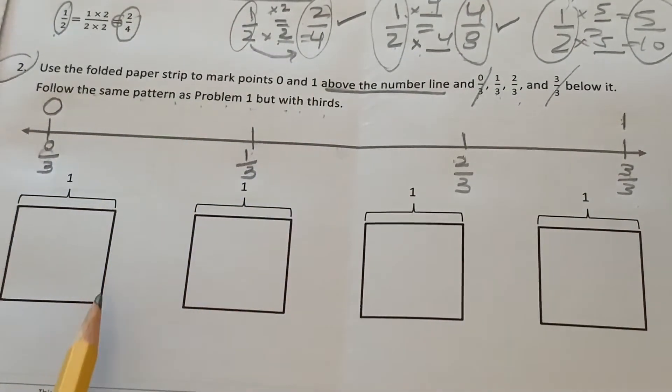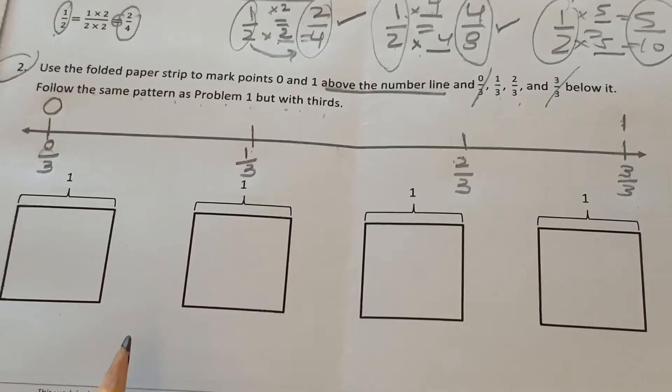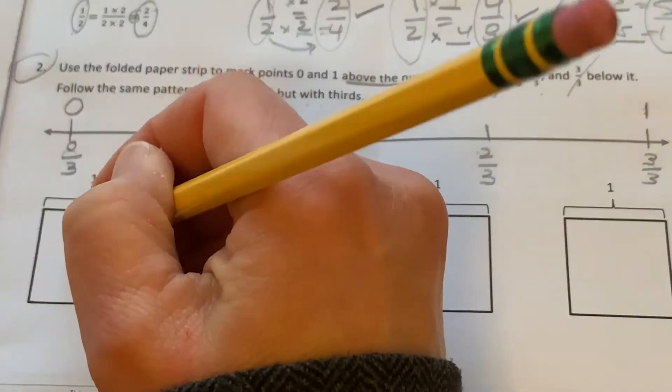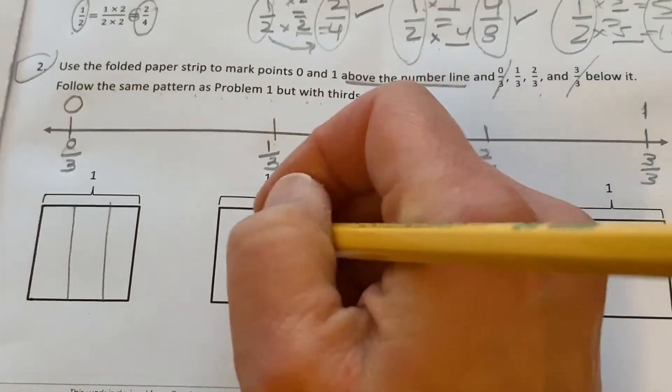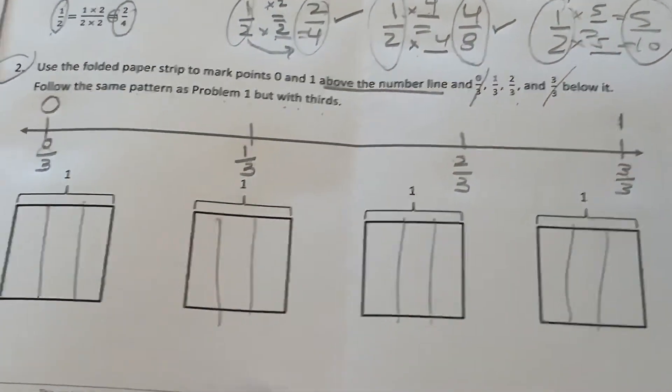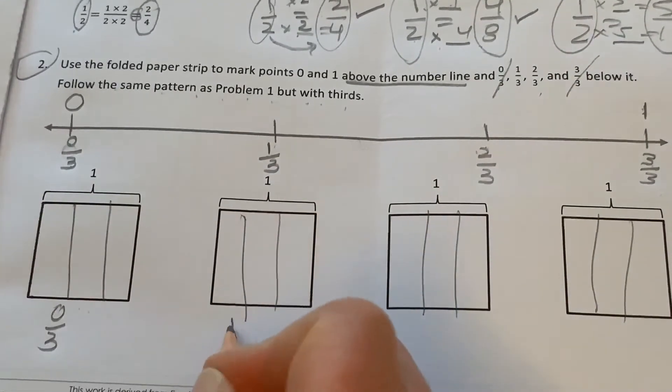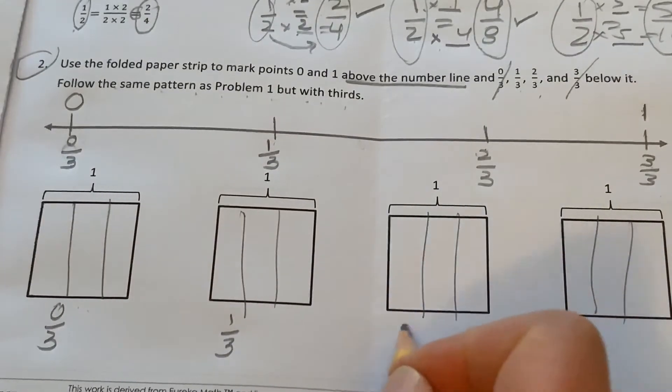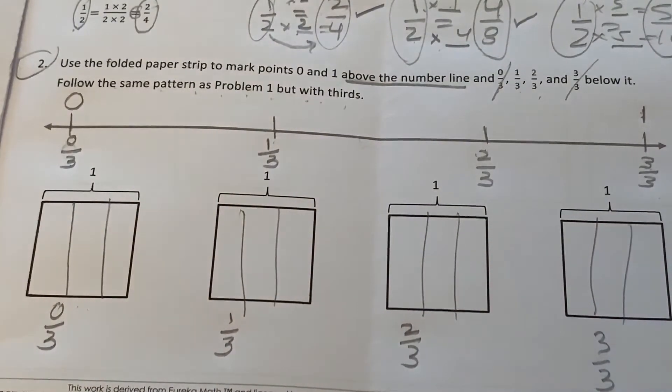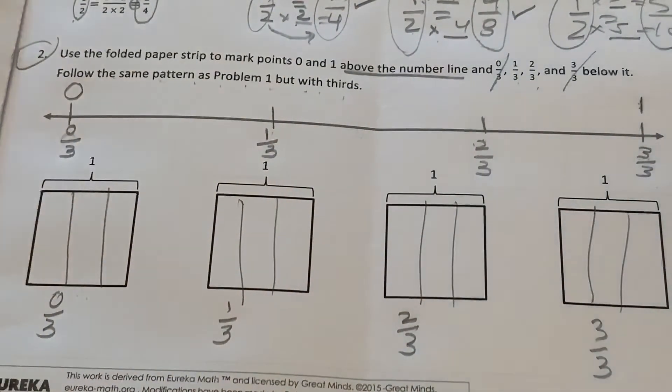Okay? So, it wants you to divide the rectangle into thirds. So, to do that, you would do two lines. Go ahead. Fill it in. Because these are now thirds. Okay? So, this one is going to show zero thirds. This one is going to show one third. This one is going to show two thirds. And this one is going to show three thirds.